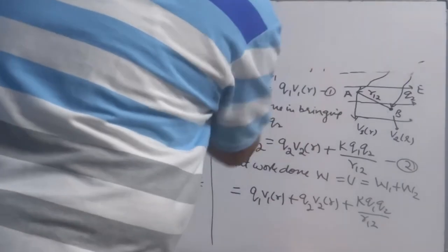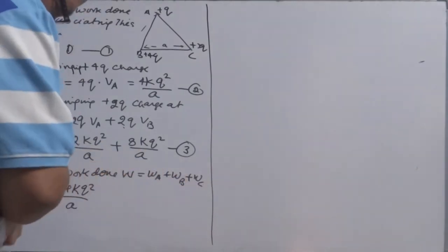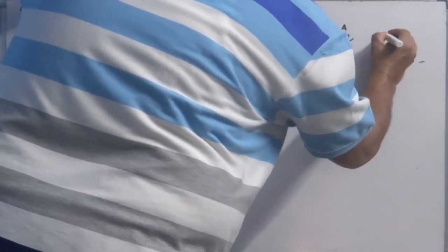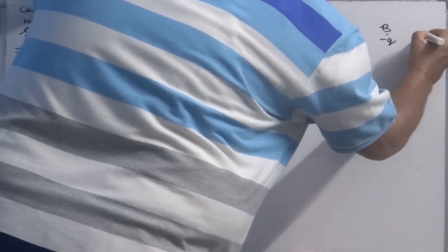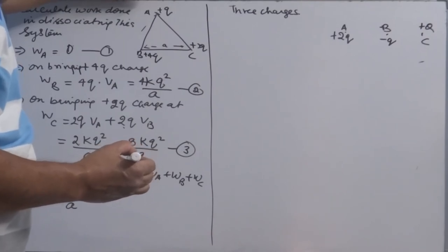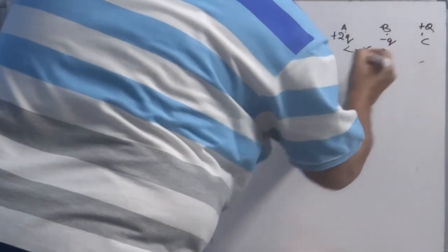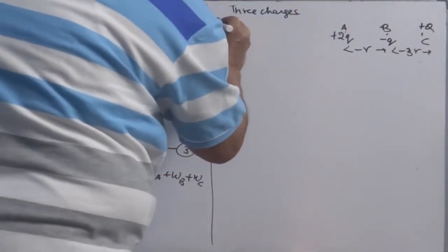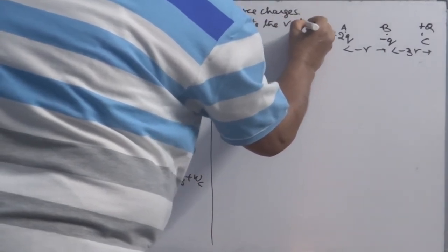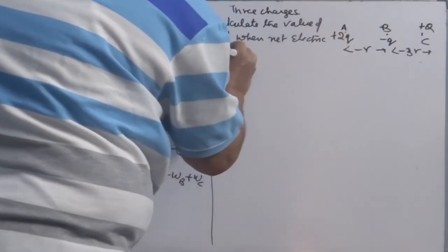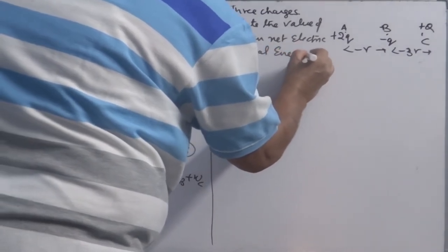Let's do one question more quickly. This has 3 charges plus 2Q, minus Q and plus Q at C located. Three charges plus 2Q at A, minus Q at B and plus Q at C are located. As shown in figure, A to B distance is R and this distance is 3R. What we have to do? Calculate the value of Q when net electric potential energy is 0.